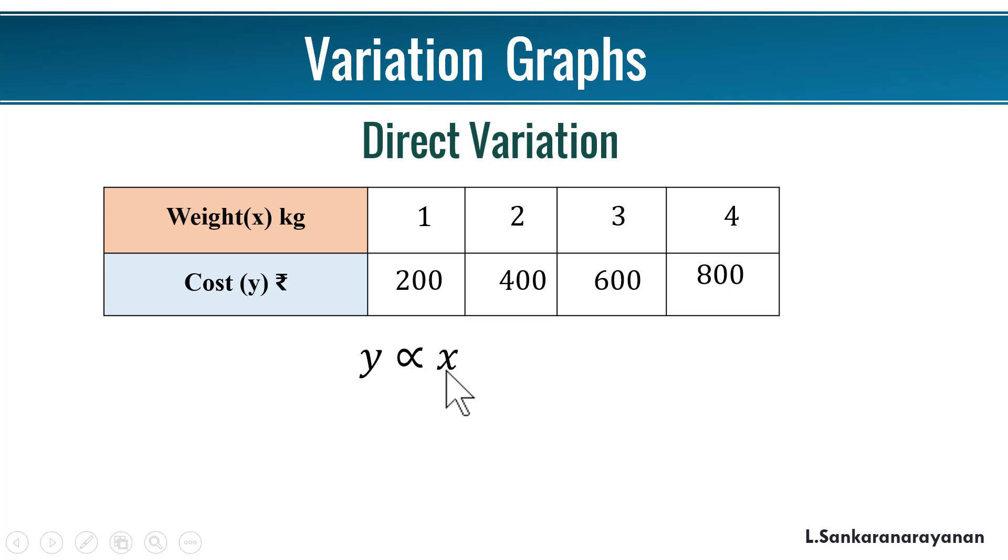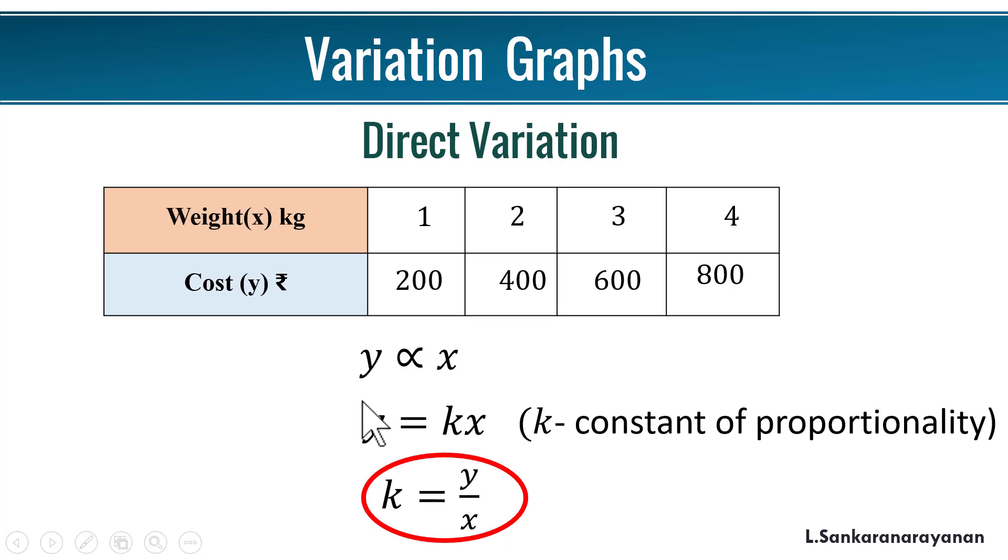So we say y is directly proportional to x. To remove this proportionality, we use a constant: y is equal to k into x. What is the meaning? Y directly proportional to x means y is equal to some constant into x. This constant is called constant of proportionality. From this we can find k, so k is equal to y by x. This y equal to kx is known as the equation of direct variation.